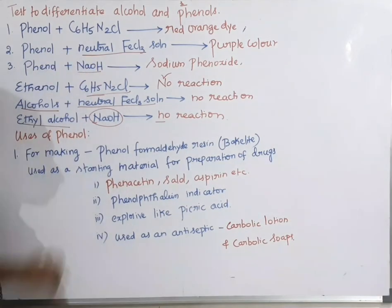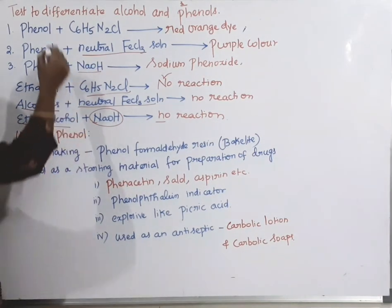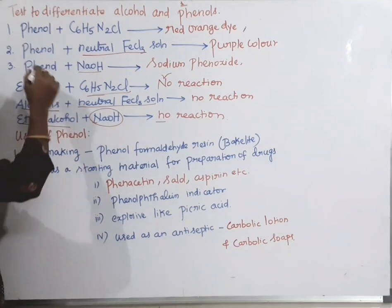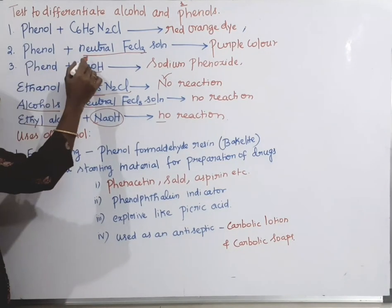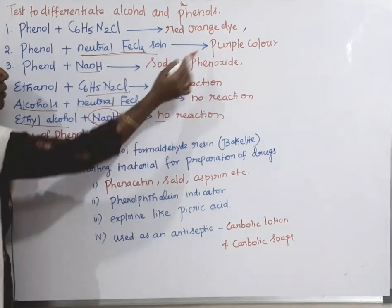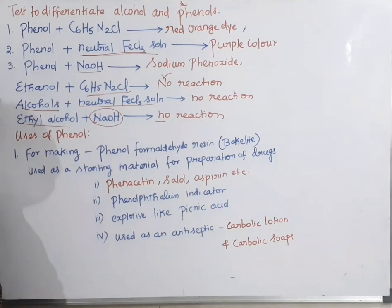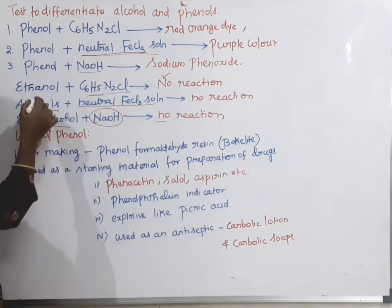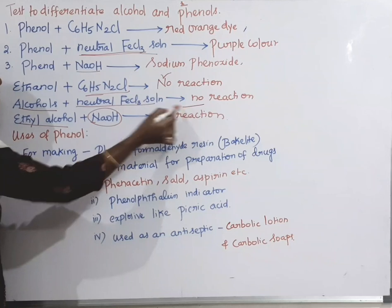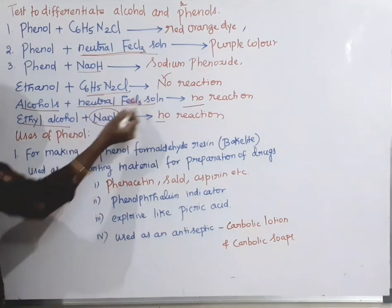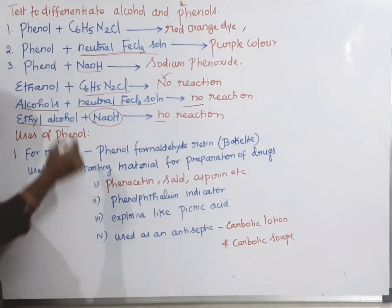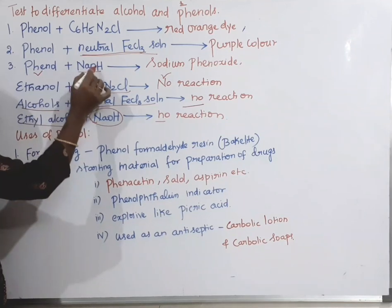The second test: phenol reacts with neutral ferric chloride solution and gives purple color formation, but alcohols do not give any coloration with neutral ferric chloride solution.